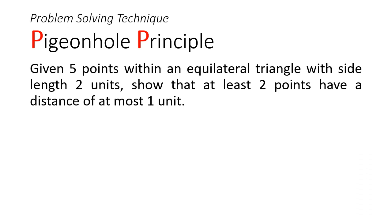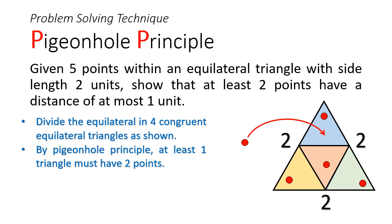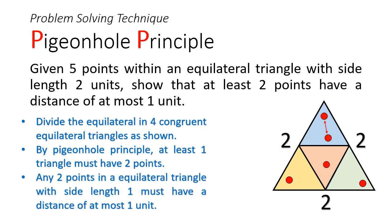Here we have an equilateral triangle. Let's divide it into 4 congruent triangles of side length 1. Next, we place 1 point in each of these triangles. Since we have 5 points, one of these triangles must have 2 points. And since any 2 points in an equilateral triangle of side length 1 must have a distance of 1 unit or less, we have proven this mathematical statement.